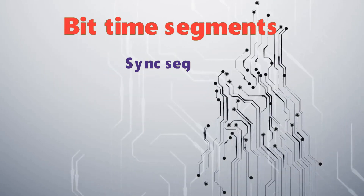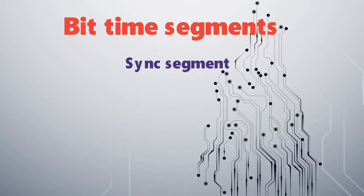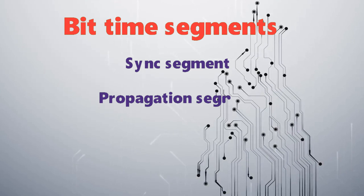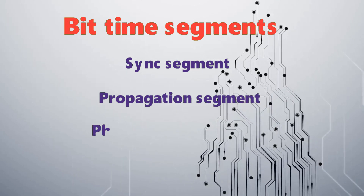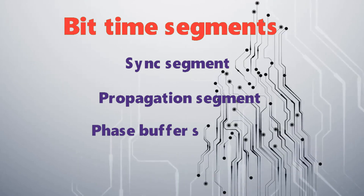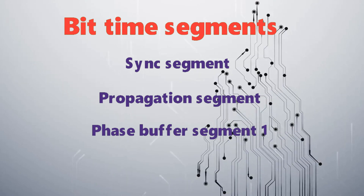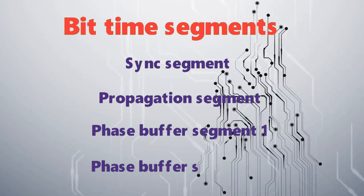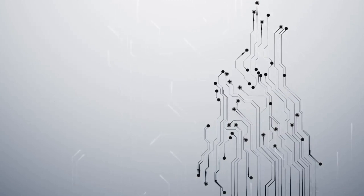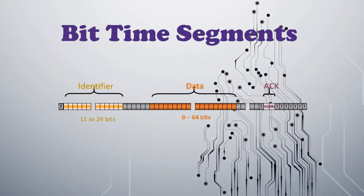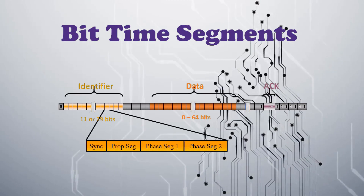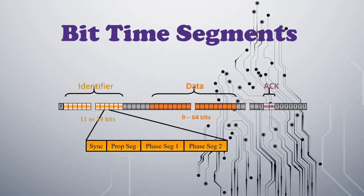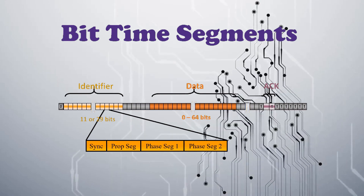Bit time is made up of different segments: the sync segment, propagation segment, phase buffer segment 1, and phase buffer segment 2. So one bit time has 4 different segments.